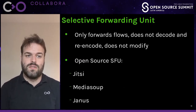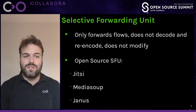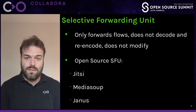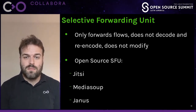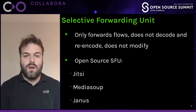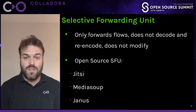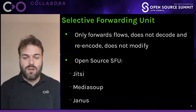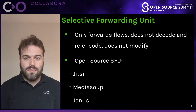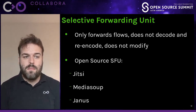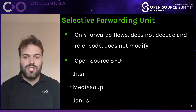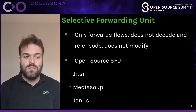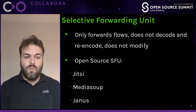There exist two other kinds of servers. The first and most popular is called a Selective Forwarding Unit (SFU). It doesn't decode and encode the video — it just forwards the flows. This is what is used by many of the online video call platforms. One big advantage is that it's cheaper on the server because it can receive many flows and just forward some of them. For example, if you have a thousand participants, maybe it only forwards you the flows of five or ten participants. The most popular open source SFUs are probably Jitsi and Janus, and there's also MediaSoup — all three are widely used and pretty reliable.